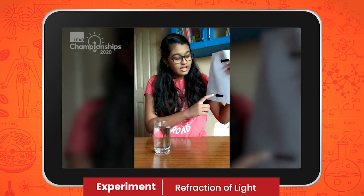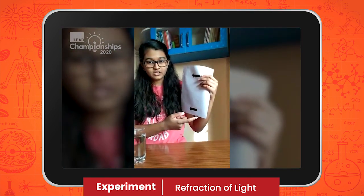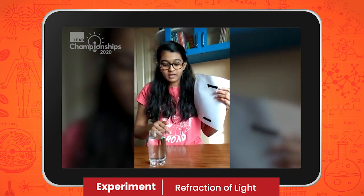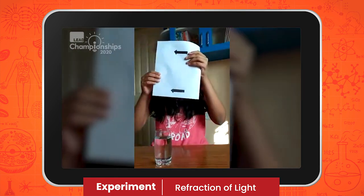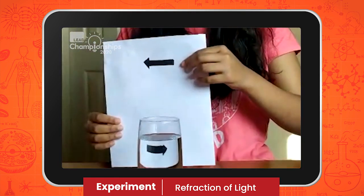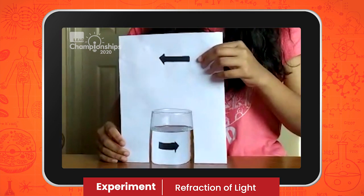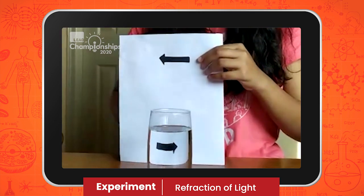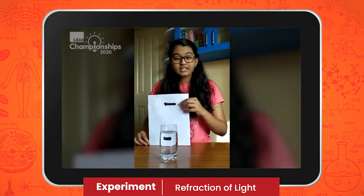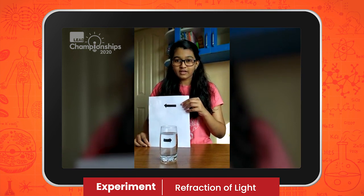I think that the arrow will point in the opposite direction when we see it through this glass of water. Now let us lower this sheet of paper. Yes, I was right. As you can see, the arrow is pointing in the opposite direction. This is because of the refraction of light.